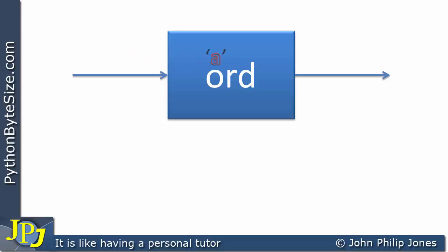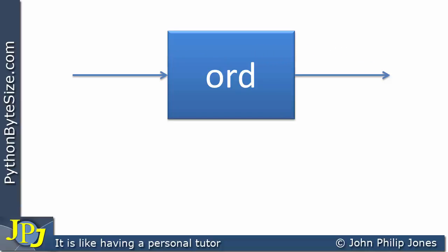If I put lowercase a into the function I get 97 out. Lowercase b will be 98 — I know it's one bigger than lowercase a. Carrying on, lowercase z gives 122. So we can see that every particular character has a number, as you can see from these examples.